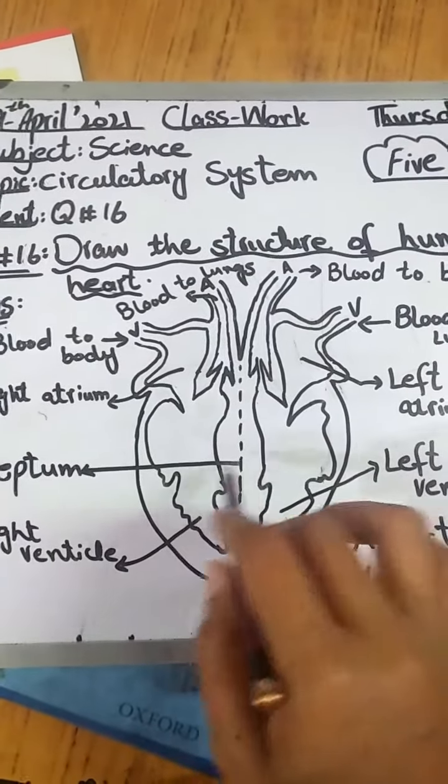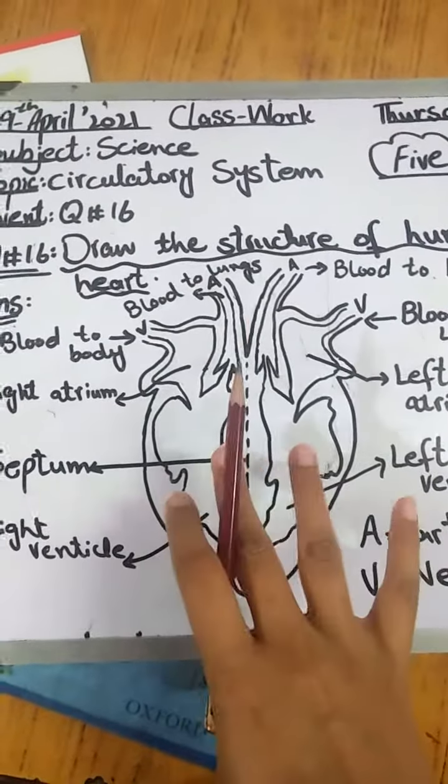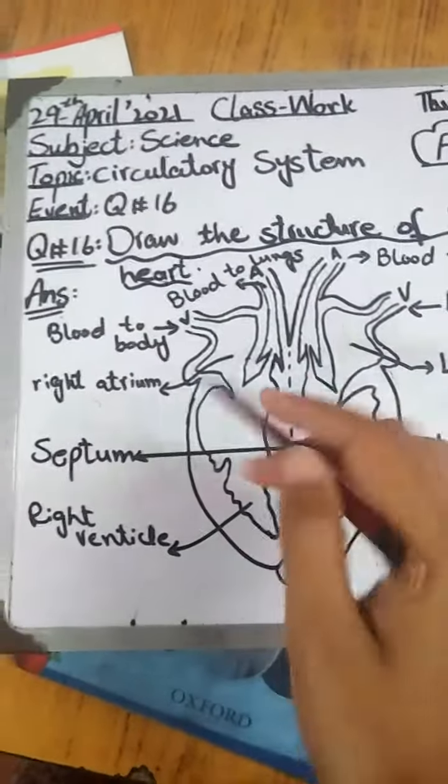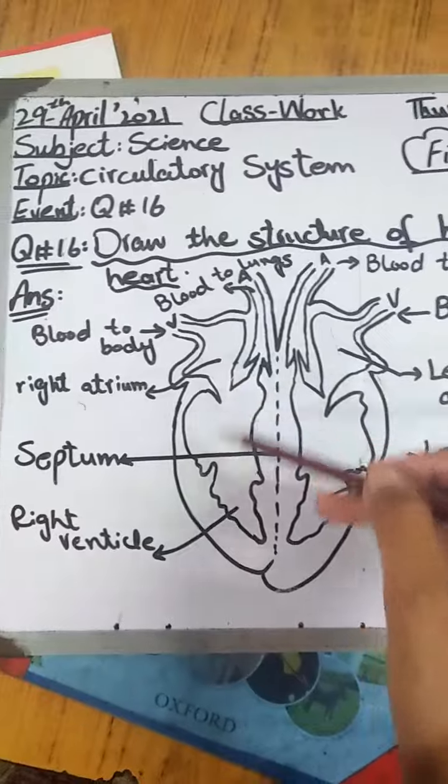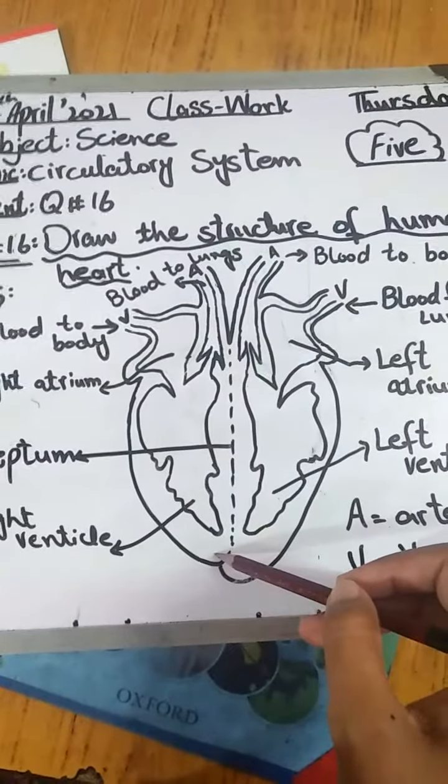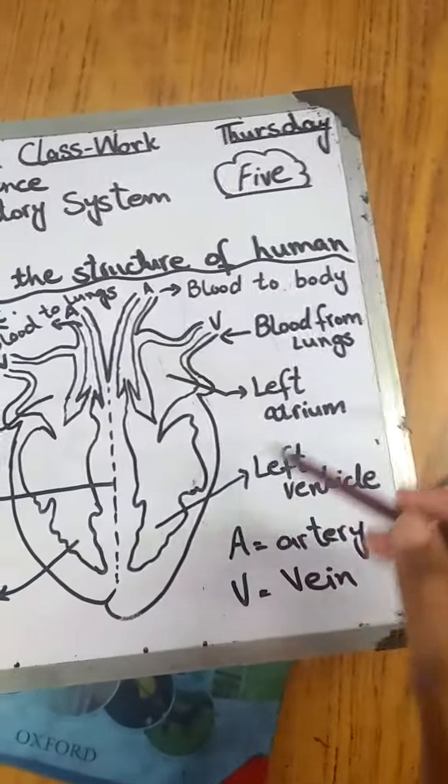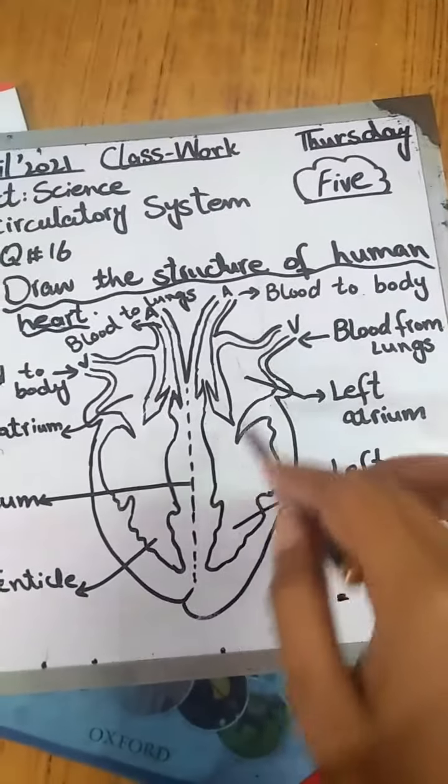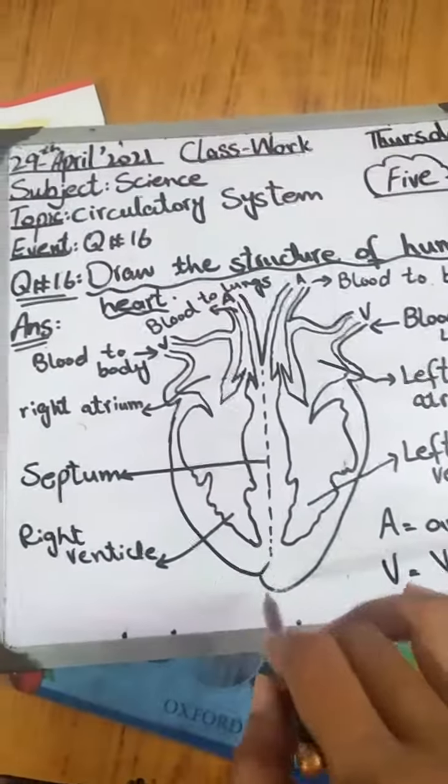The parts of the heart: the left side and the right side. The upper side is atrium and the right side is ventricle. Okay students, this way you can draw and label.